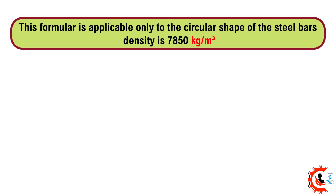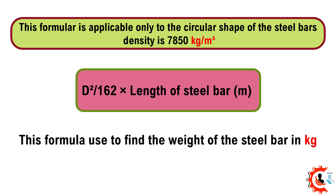This formula is applicable only to the circular cross-section of a steel bar with density 7850 kilograms per cubic meter. The full formula is: Weight = (d² / 162) × length of steel bar, in kilograms.